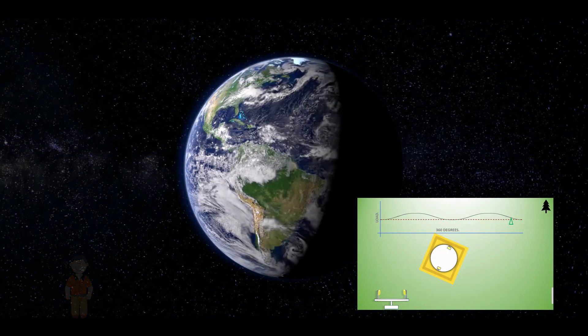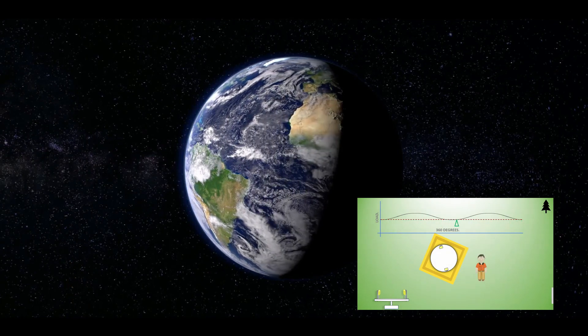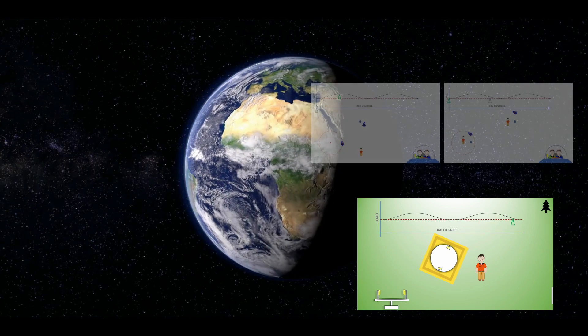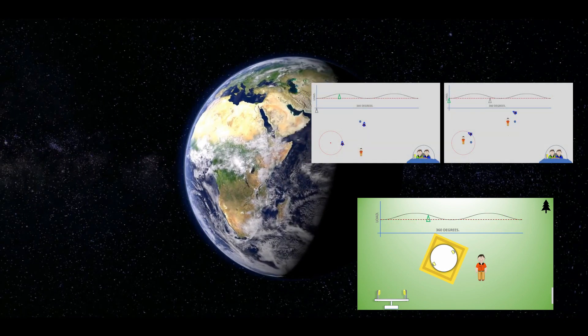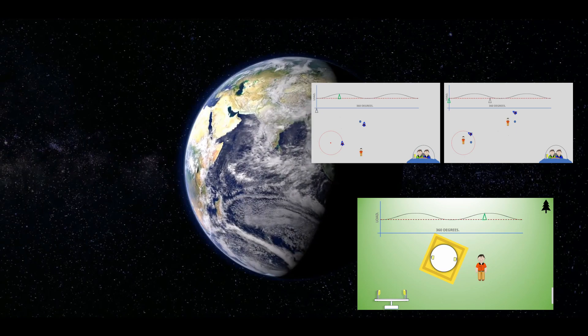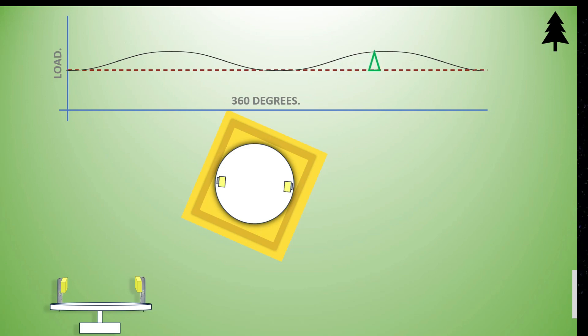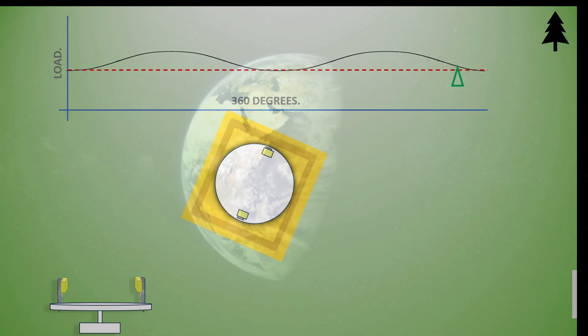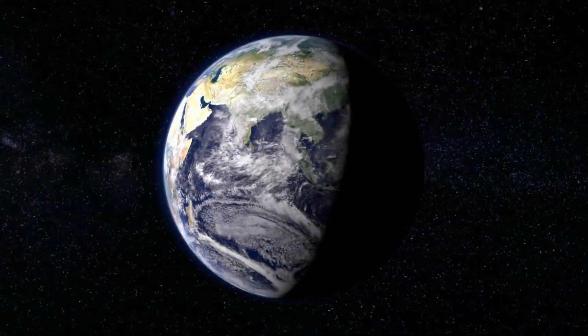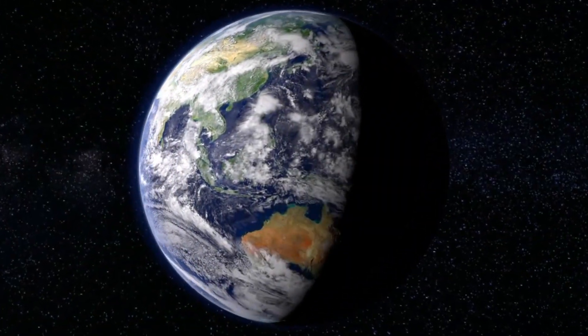When the observer changes position, the graph's readout remains the same. Only their perception of what is happening to the mass changes. If we see no curves on the graph, the ground is not moving. If it's not moving, we don't live on this.